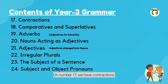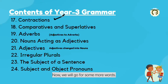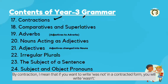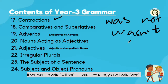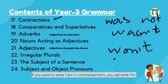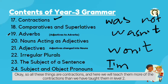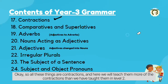On number 17, we have contractions. Contractions were already introduced in level 2, and now we will go for some more words. By contraction, I mean that if you want to write 'was not' in contracted form, you write 'wasn't'. If you want to write 'will not' in contracted form, you write 'won't'. If you want to write 'I am' in contracted form, you write 'I'm'. Here we will teach them more contractions than were covered in level 2.